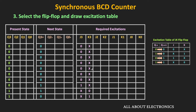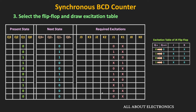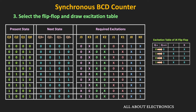Similarly, we find the required excitations for J2 and K2, where Q2 is the present state and Q2+ is the next state. Using the JK excitation table, we find the required J2 and K2 values. By following the same procedure, we can also find the excitations for J1, K1, J0, and K0. In this way, we get the required excitations for each flip-flop.